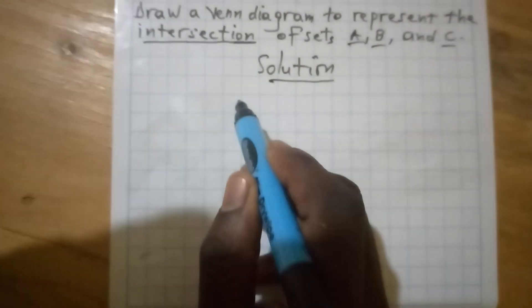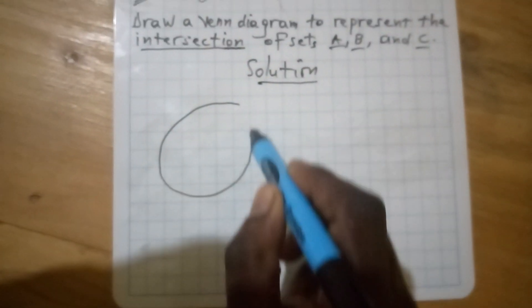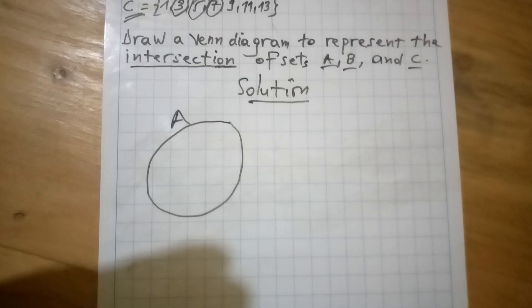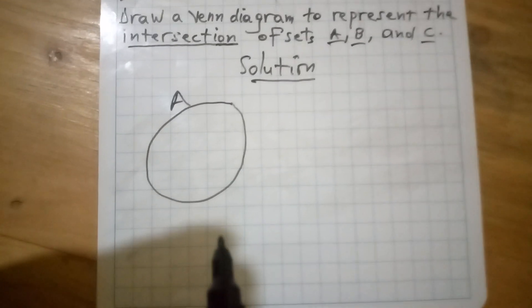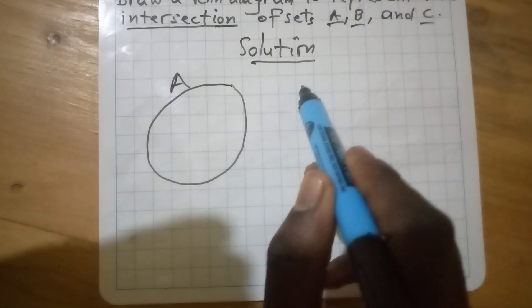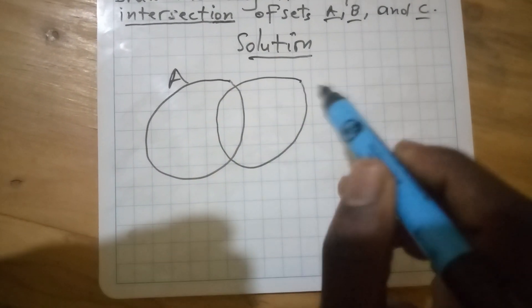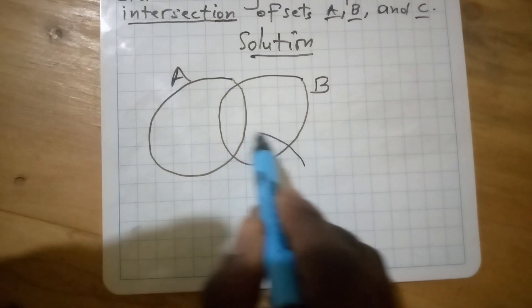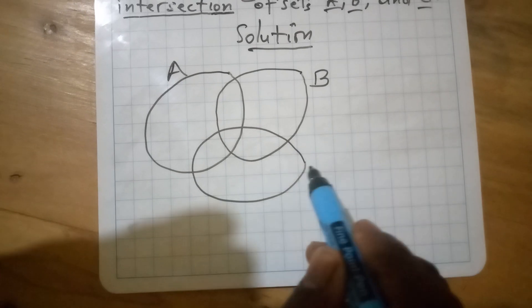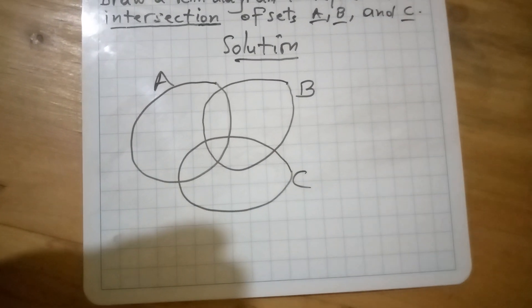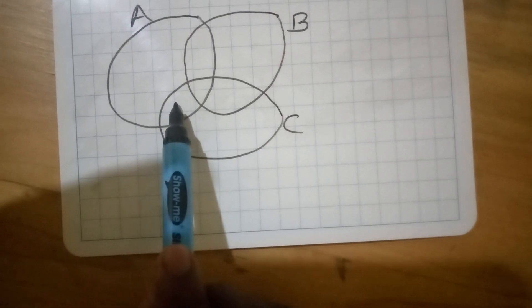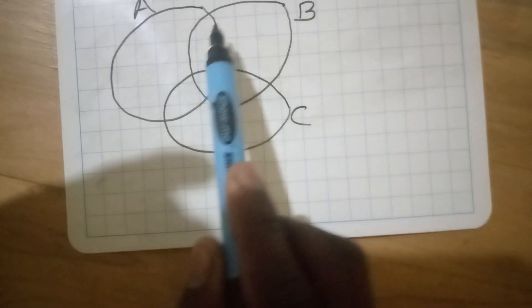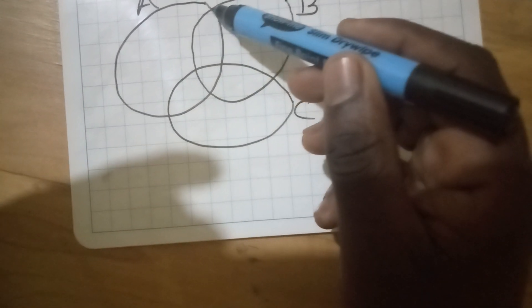To draw the solution, before inserting elements within set A, you have to draw the three sets overlapping one another. This is set A, this is set B, and here we draw another set which is set C. These sets are intersecting: A and C intersect in one region, and A and B intersect in another region.